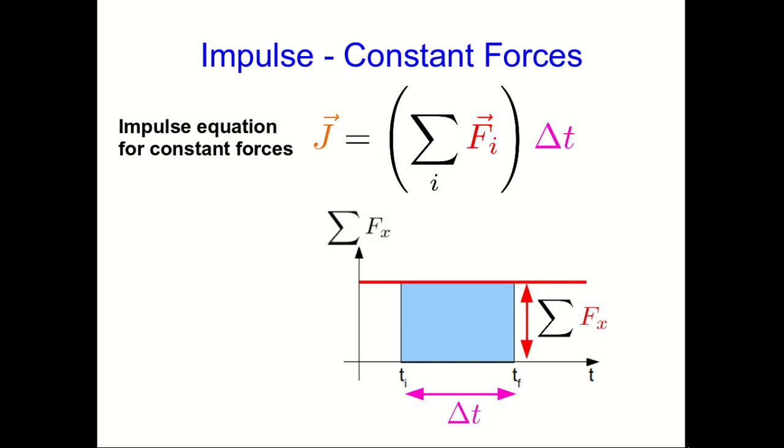And when you multiply those two together, that's going to give you the x component of the impulse. But look, it's just the area under the graph.